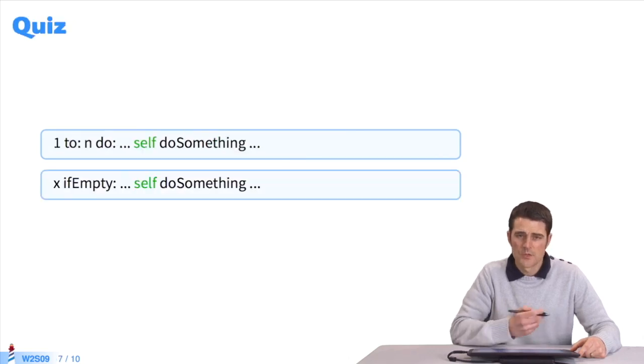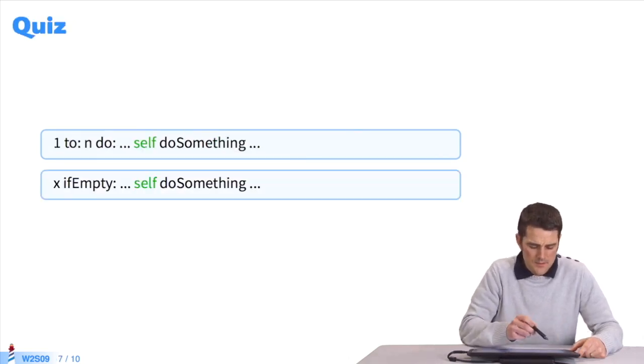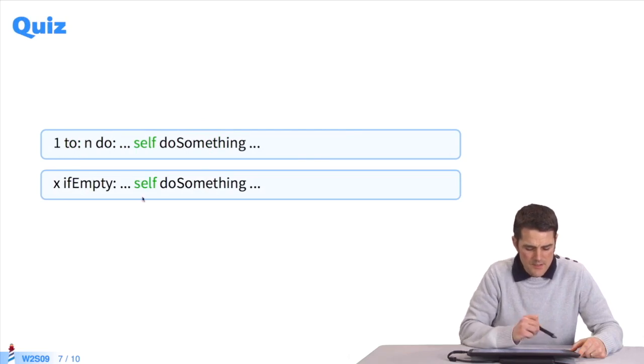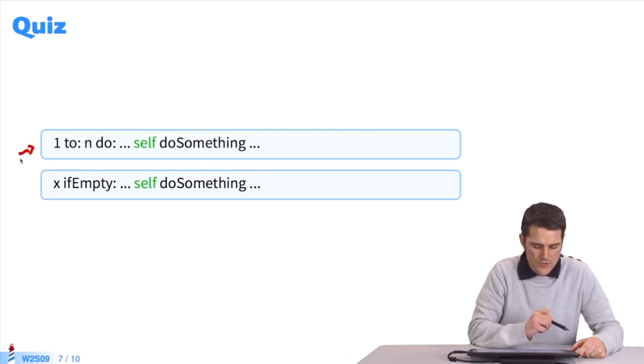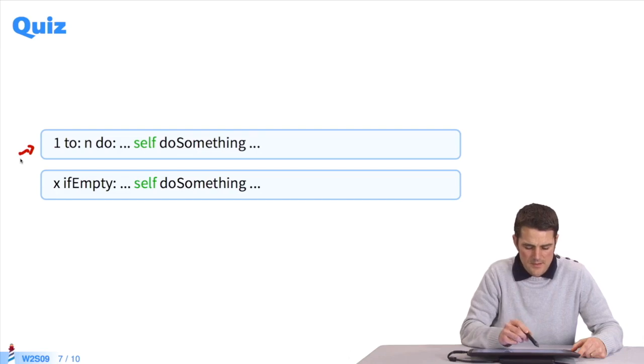Let's do a small exercise. If I give you the two following expressions: repeat from 1 to n self do something, and x if empty self do something. Should I use parentheses or brackets?